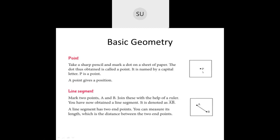Then we studied what is a line segment. A line segment has two endpoints and you can measure its length — the distance between the two endpoints. It has a specific length. You represent a line segment with two letters for its endpoints, like AB with a line on top.